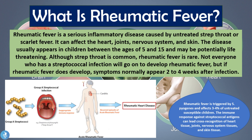What actually happens in rheumatic fever is that the immune response against the streptococcal antigens can lead to cross-recognition of heart tissue, joint tissue, nervous system tissues, and skin tissues. When someone has a strep throat infection caused by group A Streptococcus pyogenes, if left untreated it triggers an inappropriate immune response against these streptococcal antigens, which cross-recognizes tissues of the heart, joints, nervous system, and skin, causing inflammation. The body attacks these tissues thinking it's fighting the bacteria, but it's actually fighting its own tissue — essentially an autoimmune response.